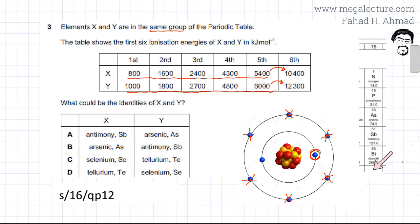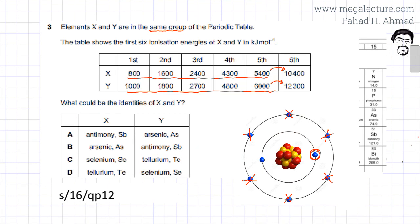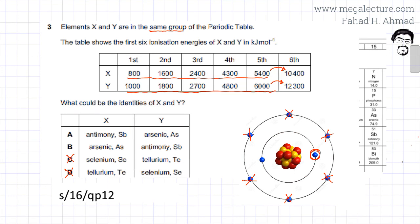Opening the periodic table and looking at Group 5 — now known as Group 15 — we can list all those elements. Notably, there is no tellurium (Te) in Group 15, so any answer options containing Te can be eliminated as incorrect, since both X and Y must be Group 5 elements.